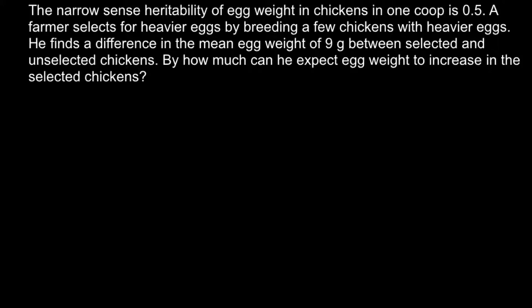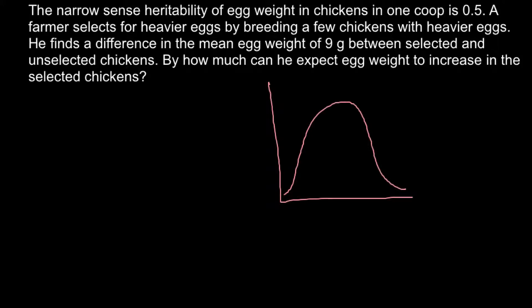Imagine a graph showing egg weight distribution in the coop. The mean would be 100 grams — this is the mean of the original generation. On one shoulder of the distribution we have eggs that weigh less than 100 grams, and on the other shoulder we have eggs that weigh more than 100 grams.